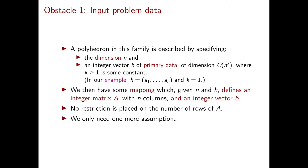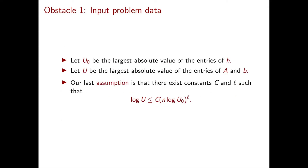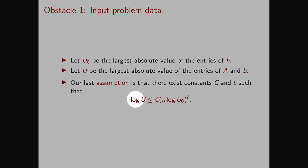We are not yet done with our first assumption. The runtime of the ellipsoid method depends on U, which is an upper bound on the absolute values of the entries of A and B. So if we hope to obtain a polynomial time algorithm, we need to guarantee that log U is polynomial in the size of our primary data. We let U_0 be the largest absolute value of the entries in our vector of primary data. Our last assumption is that log U is polynomially bounded by n and log U_0 — formally, there exist constants C and L such that log U is upper bounded by C times n times (log U_0) to the power of L.